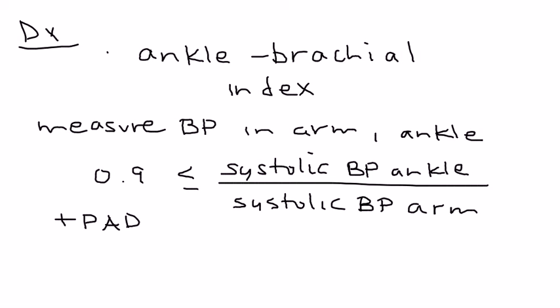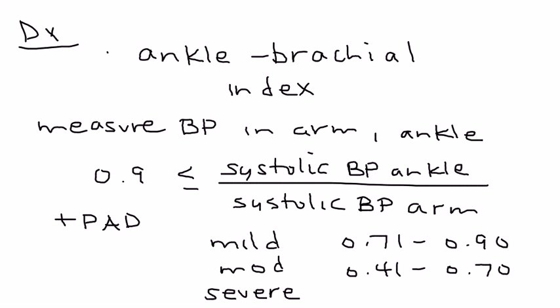If this number is less than 0.9, then that is positive for peripheral arterial disease. They have categories: mild is 0.71 to 0.9, moderate peripheral arterial disease is 0.41 to 0.7, and severe peripheral arterial disease is less than 0.4.